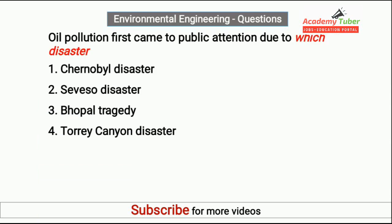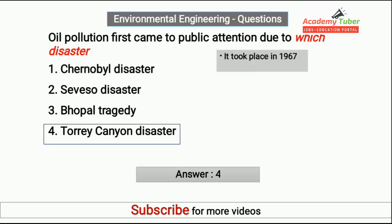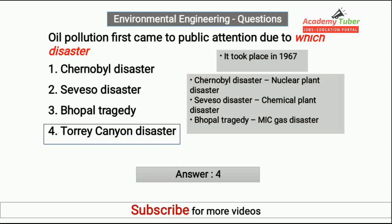Oil pollution first came to public attention due to which disaster? Answer is Torre Canyon Disaster, which took place in 1967. Chernobyl disaster was a nuclear plant disaster. Seveso disaster was a chemical plant disaster. And Bhopal gas tragedy is a gas disaster.